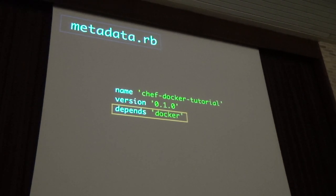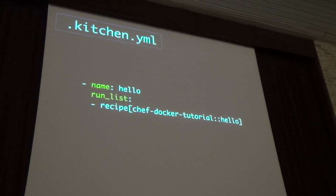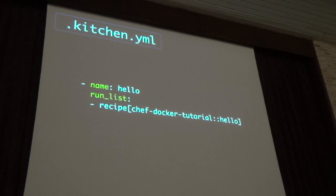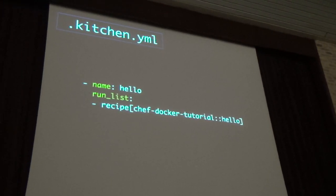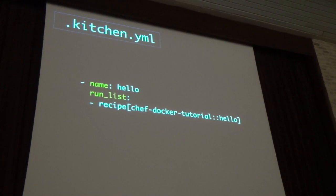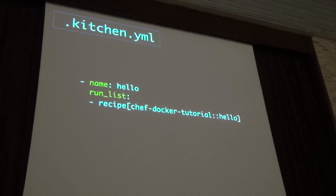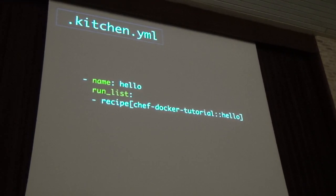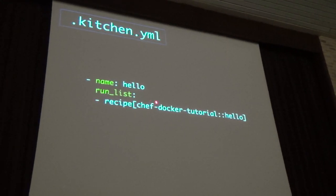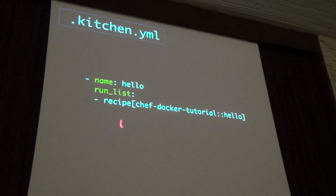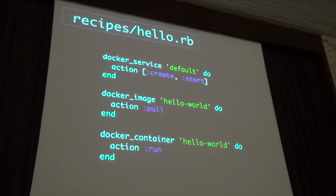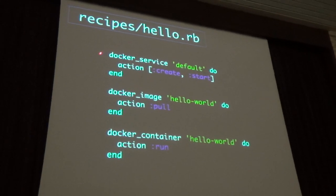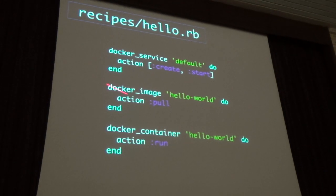There's a thing called Test Kitchen — it's config management agnostic. You can use Test Kitchen with shell scripts, Puppet, or Ansible. The first thing you need to do is wire up the cookbook you want to test and the recipe inside it. This is basically what it looks like to use the Docker cookbook.